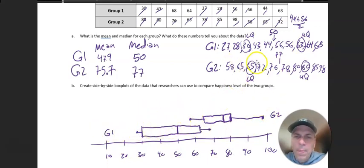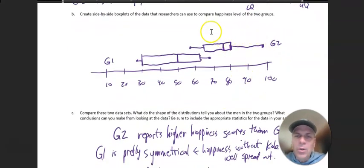So here's my box plot for group one. Look at this: lower extreme is 58—sorry, group one is the top one. Lower extreme is 27, lower quartile's at 30, median's at 50, upper quartile, etc.